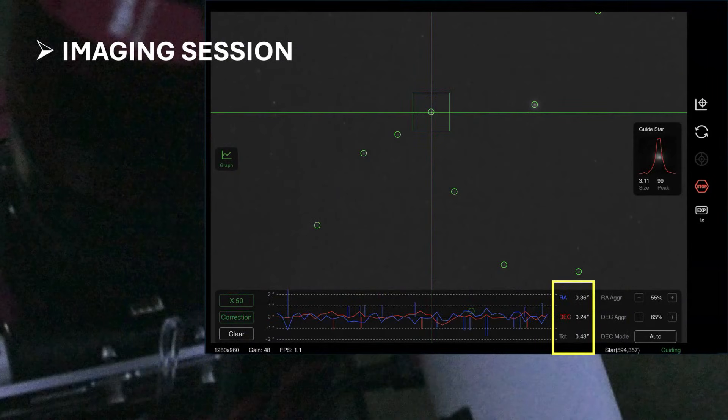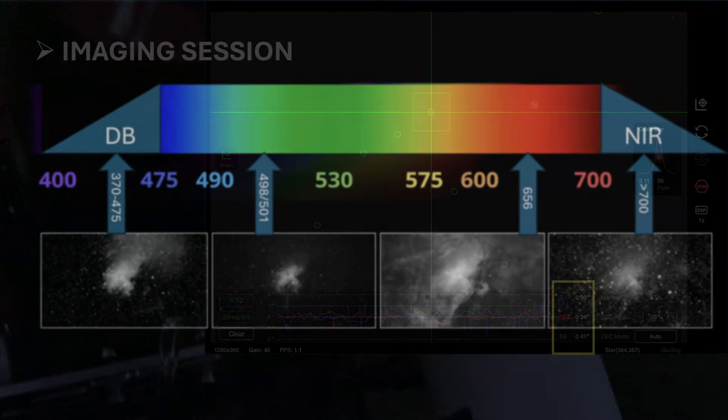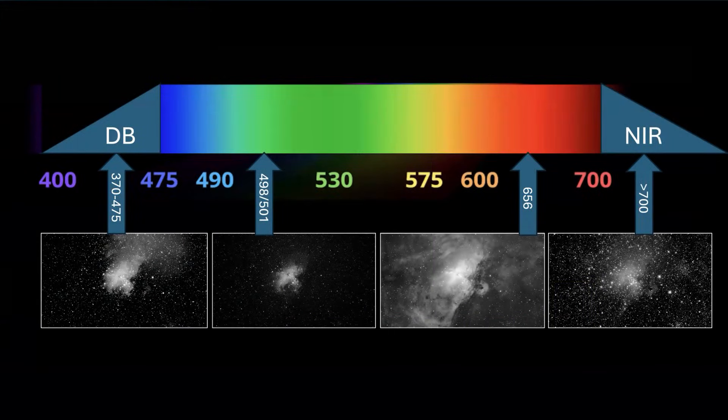I'm using the ZWO AM5N strain wave mount. The total error of this mount is better than 0.5 arc seconds.